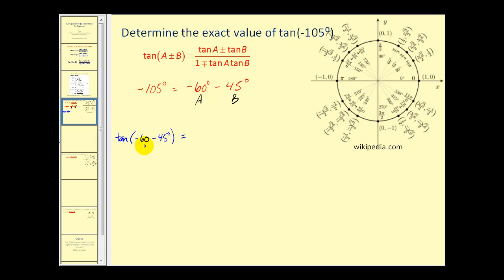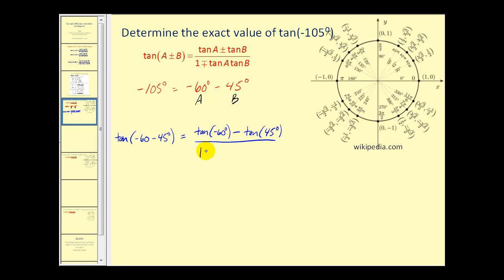The tangent of negative 60 minus 45 degrees equals tangent A, or tangent of negative 60 degrees, minus tangent B, or tangent of 45 degrees. Notice that since we're using the difference identity, angle B is positive 45 degrees. We divide this by one plus tangent A, or tangent of negative 60 degrees, times tangent B, which is tangent of 45 degrees.